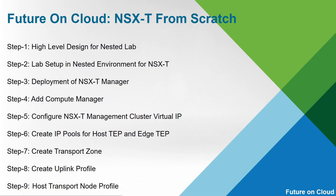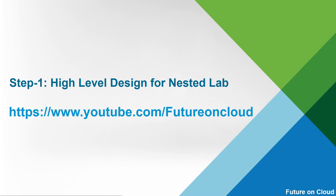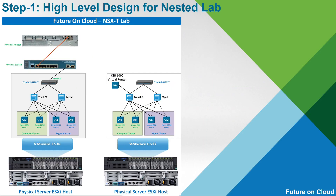Step one is the high level design of the nested lab. If you look at the diagram, I have two options: I can set up this environment either with the physical infrastructure, or I can go ahead with a virtual router. In this lab, my physical environment has one bare metal server, on top of which I am running a hypervisor, and on top of that I have installed four virtual machines which will pretend as physical servers in the NSX-T environment. These four virtual machines are running ESXi 7.0.